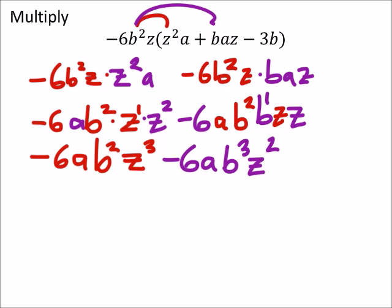And then next. I've got the same thing. Negative 6b squared z times negative 3b. Rearranging these ones. I put that on the wrong line. Dang it. Whatever.